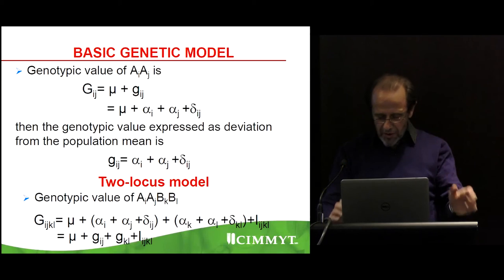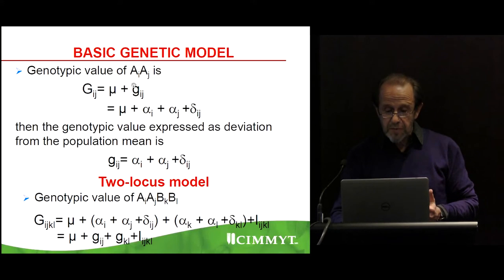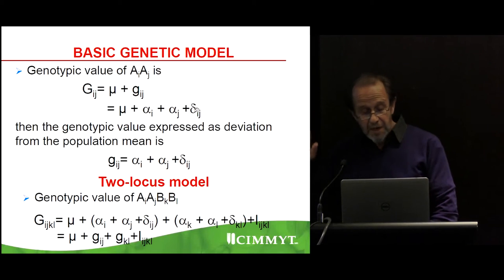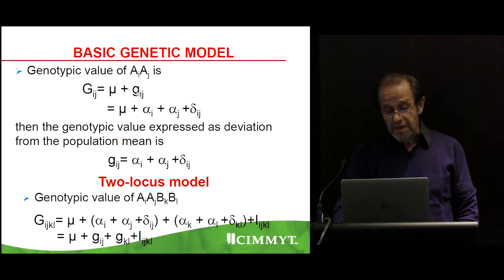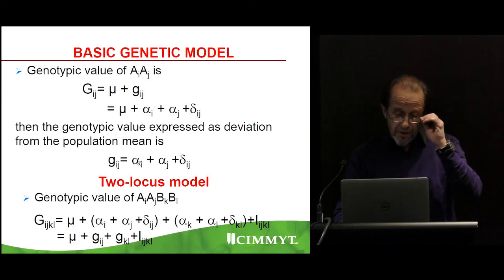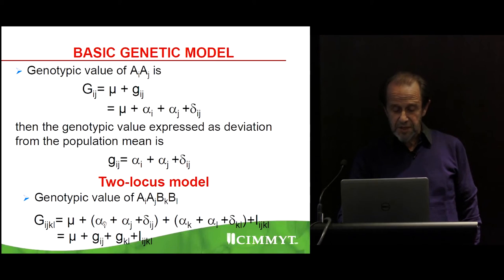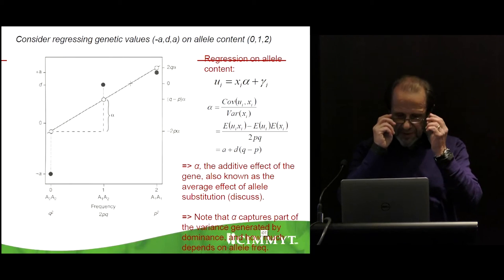The basic genetic model can be represented as: the genotypic value of individual AiAj equals mu plus the genetic effect G, where G equals the sum of allele substitution effects from parent i and parent j, plus a deviation due to dominance or other genetic effects. With two loci, you add the effect for each locus plus the deviation — which for multiple loci may include epistasis, though we won't discuss that here.